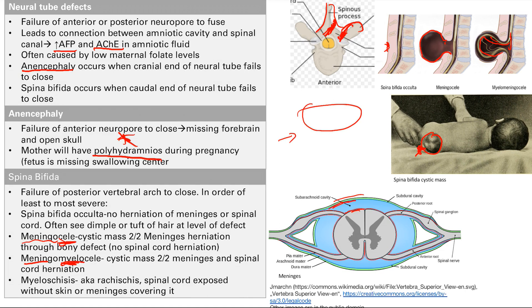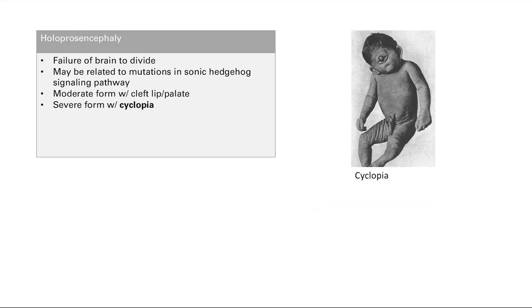Meningomyelocele involves herniation of both the meninges and the spinal cord, producing much more severe symptoms. The most severe of all is myeloschisis — also called rachischisis — where the spinal cord is completely exposed with no skin or meninges covering it. In meningomyelocele the spinal cord is still covered by skin and meninges even though it's sticking out, but in myeloschisis it is completely exposed.